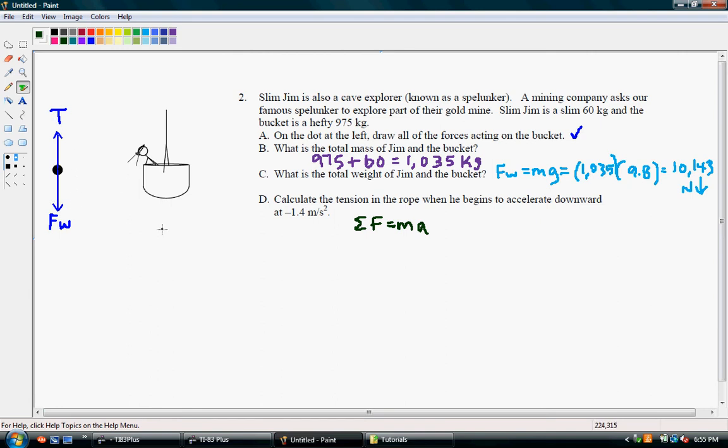And we know that the sum of the forces are these two forces combined. Well, since tension is pointing up, it's pulling Jim and the bucket up, it's going to be a positive tension. And then the force of weight is pulling the objects down, so that is going to be a negative force of weight. So the sum of those forces equal mass times acceleration.